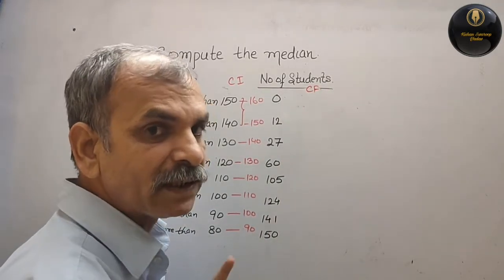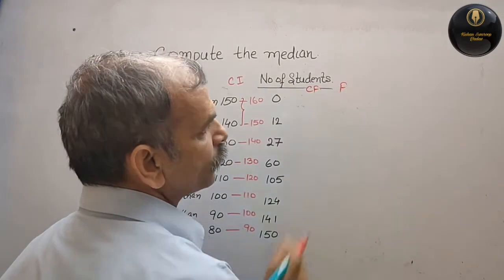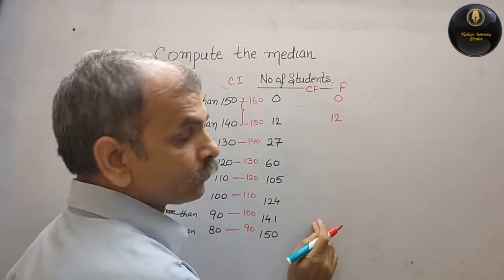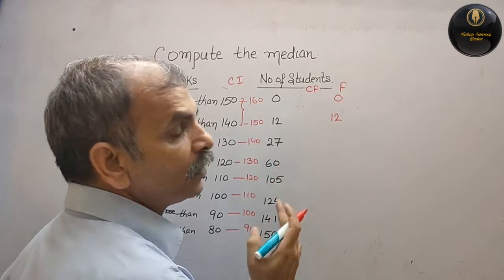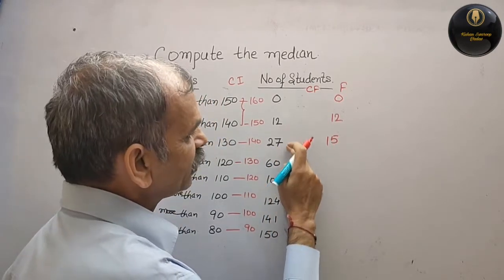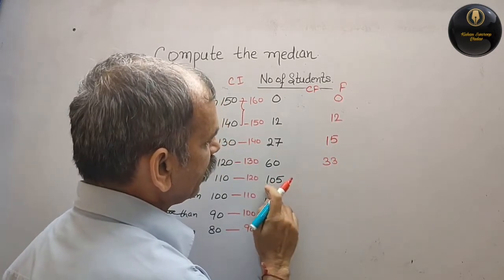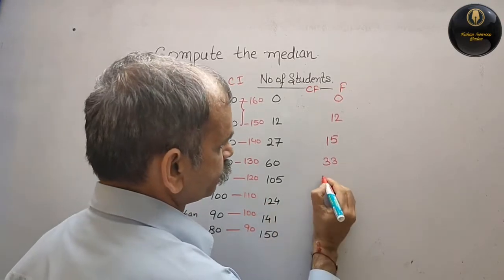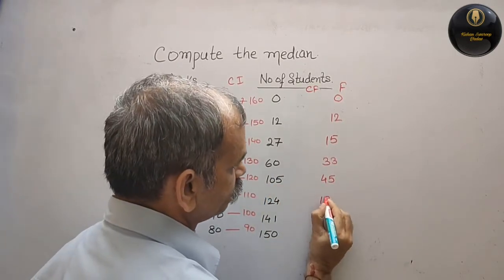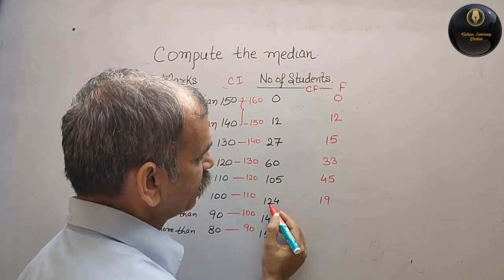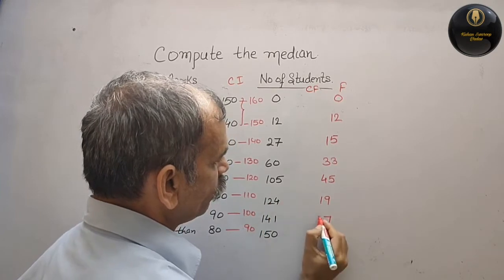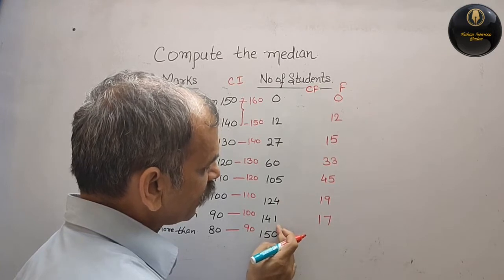Now we will make it as a frequency. So you can see what will happen: 0 hai to 0. Next, 12 minus 0 is 12. 27 minus 12 is how much? 15. 60 minus 27 is 33. 105 minus 60 is 45. 124 minus 105 is 19. 141 minus 124 is how much? We can write it as 17. Last is 150 minus 141 is 9.